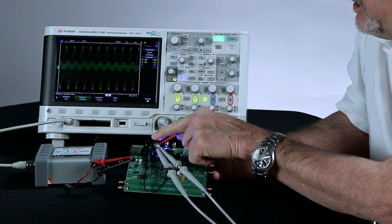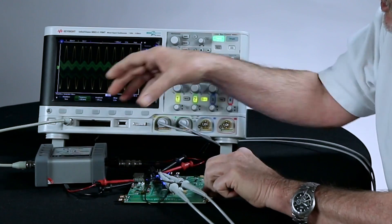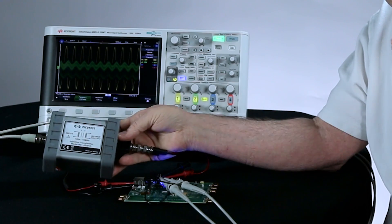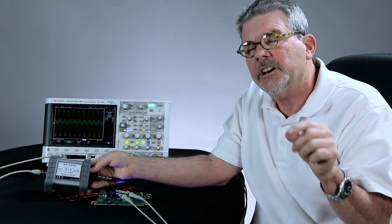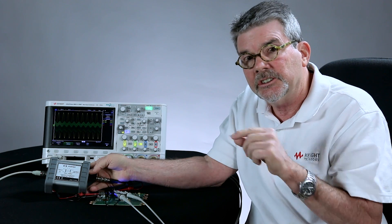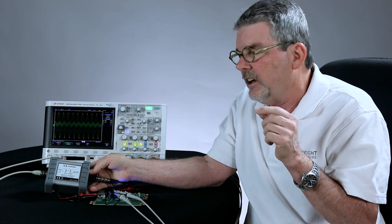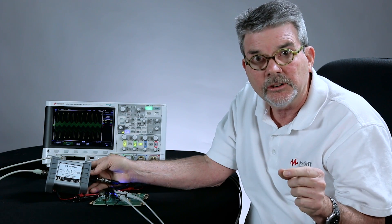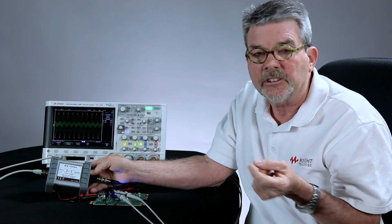I'm probing right here across the shunt resistor. Now I'm also going to be using, and it's required, an isolation transformer. Because what we're going to do is inject a low-level signal across that shunt resistor that's in the feedback path. And we can't directly connect the output of the scope's waveform generator to that shunt resistor. It needs to be isolated.